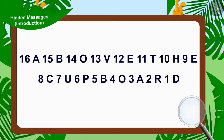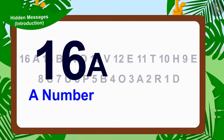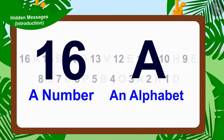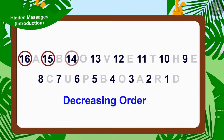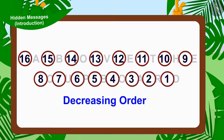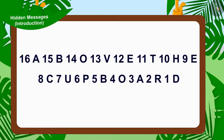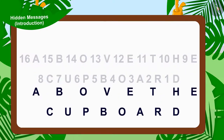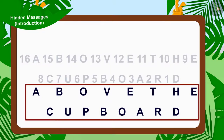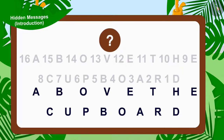If we look at Appu's second letter carefully, we will see that there is a number and an alphabet written every time. Are you able to find any hidden message in the numbers? The numbers are in decreasing order, but there is no hidden message that can be found in them. Now, let us take a look at the alphabets. If we write the alphabets separately, we will find this written. Were you able to find the second hidden message through these alphabets?